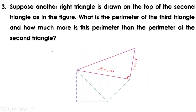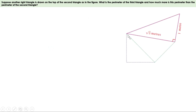Next problem: suppose another right triangle is drawn on top of the second triangle, as in the figure. What is the perimeter of the third triangle, and how much more is this perimeter than the perimeter of the second triangle? This is the second right triangle from the last problem; a new right-angle triangle ADE is drawn with AD as its base. We need to find the perimeter of triangle ADE. AD = √3 meters and DE = 1 meter; we first find AE, the hypotenuse.